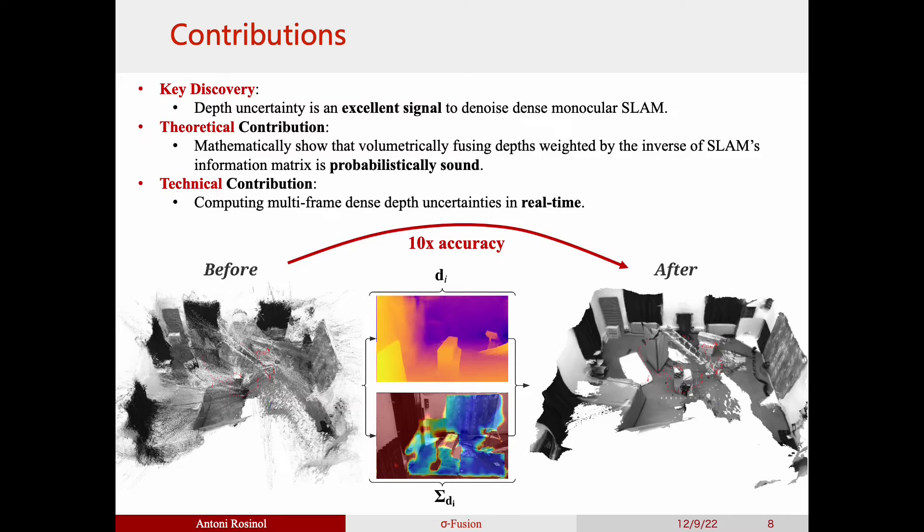Hence, our contribution is to show that depth uncertainty is an excellent signal to volumetrically fuse the depth maps from dense monocular SLAM. We show that using the depth's marginal covariance is probabilistically sound, and we also present a way to compute these depth uncertainties in real-time.